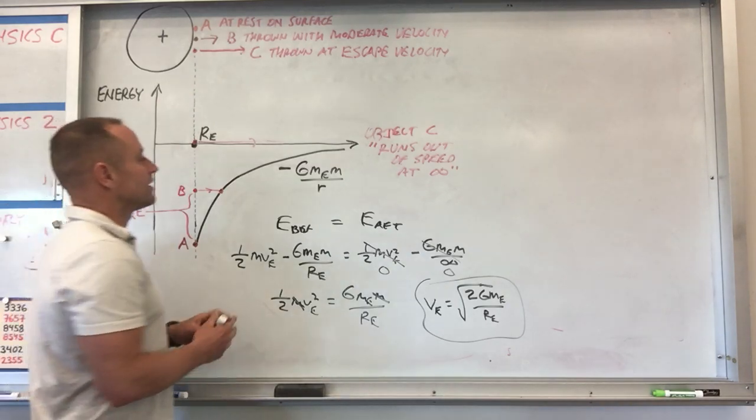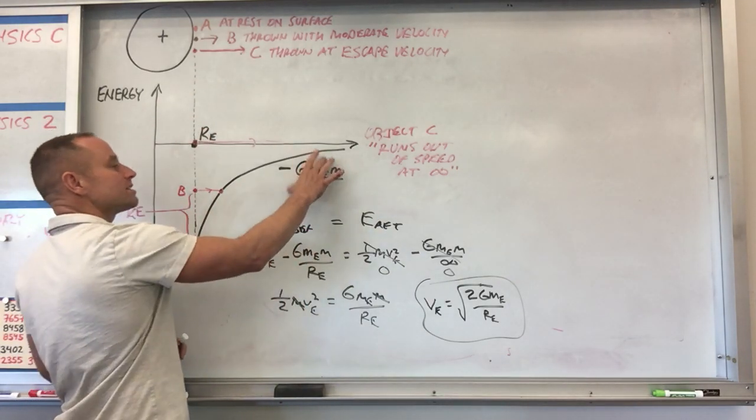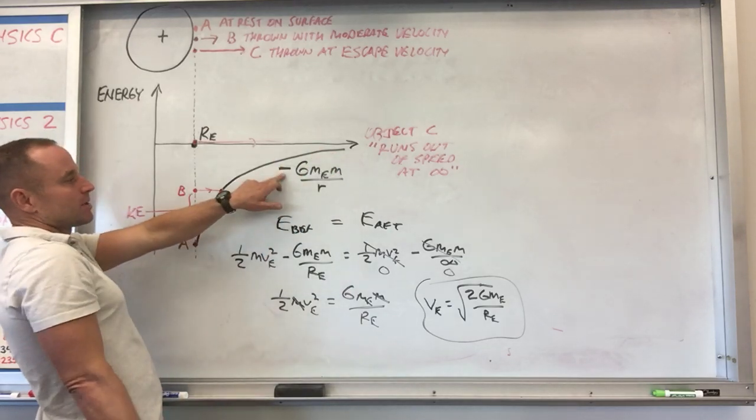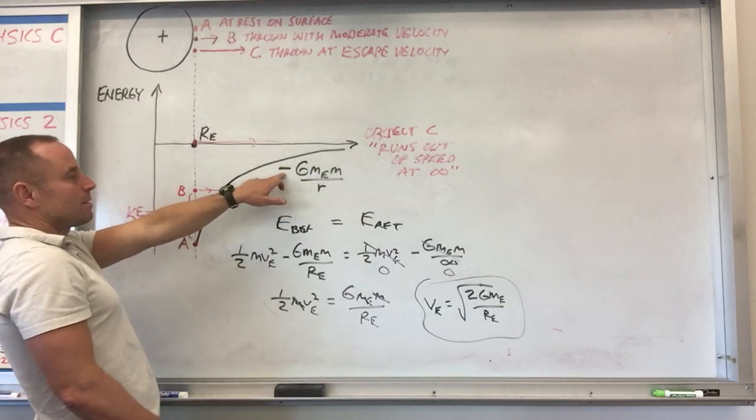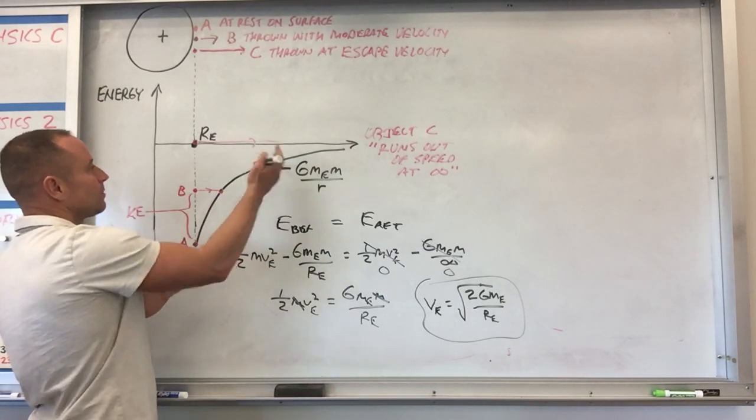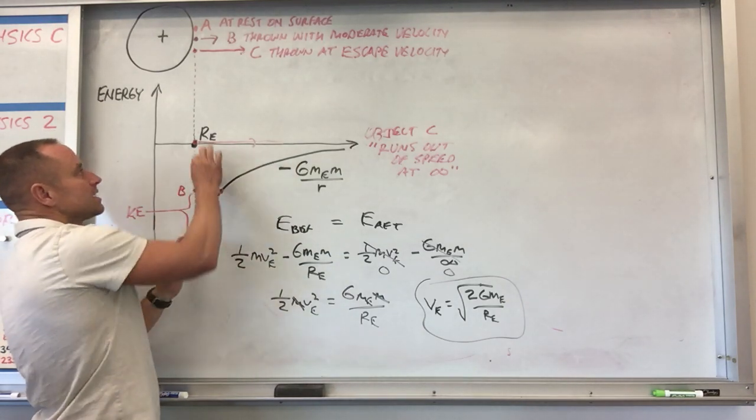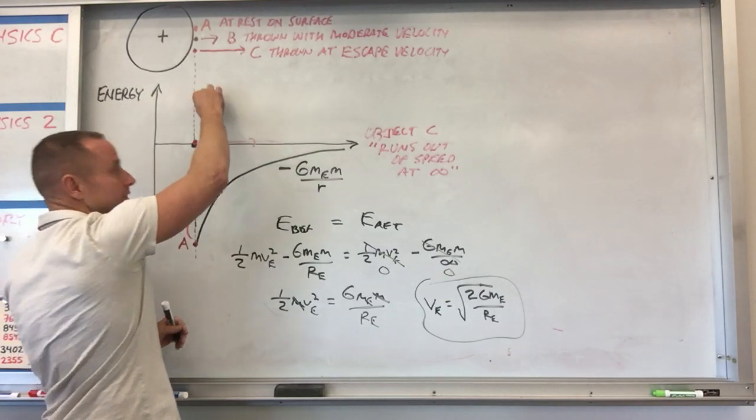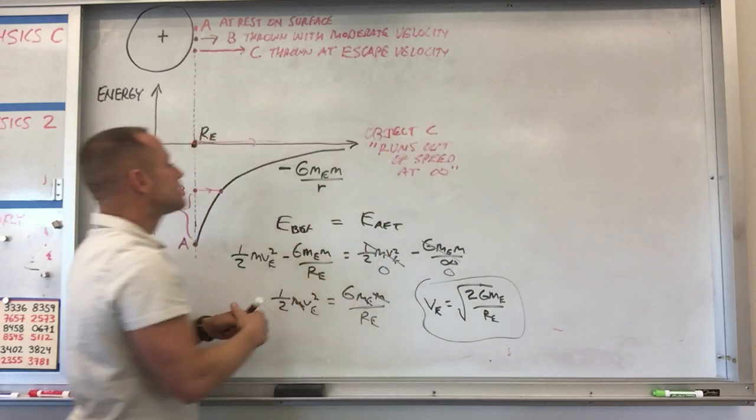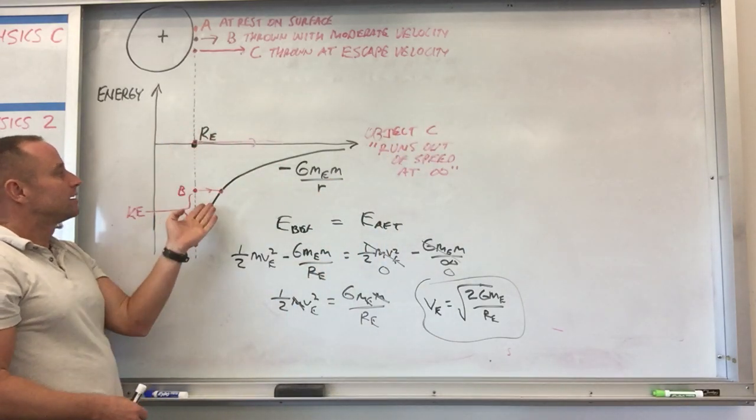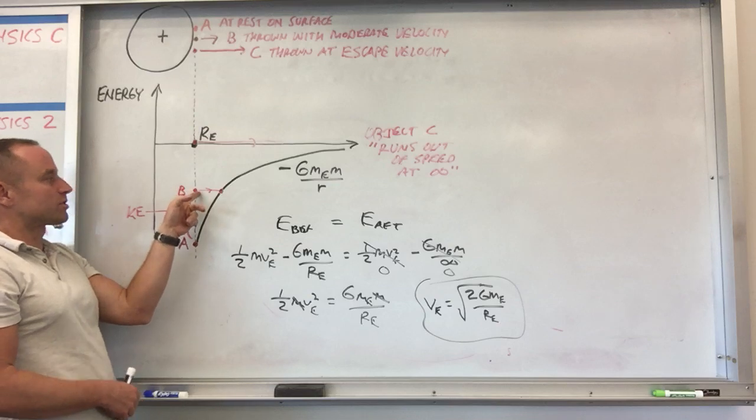So the upshot with this, you just say E before is E after, you use this just like any other potential energy. It's just that sometimes people are kind of tripped out by that negative sign. But don't worry about it, just put it in there. The other thing that you can see by setting it up like this is if an object has a positive total energy, that means it's not bound in an orbit.